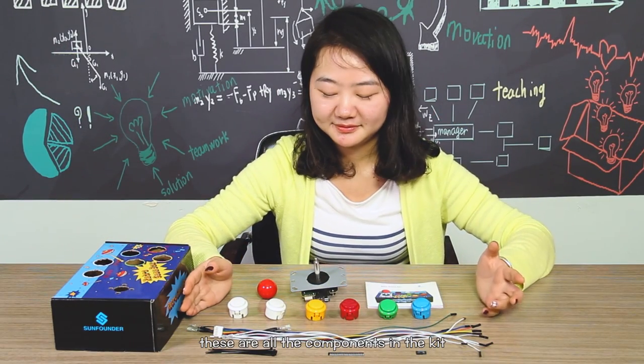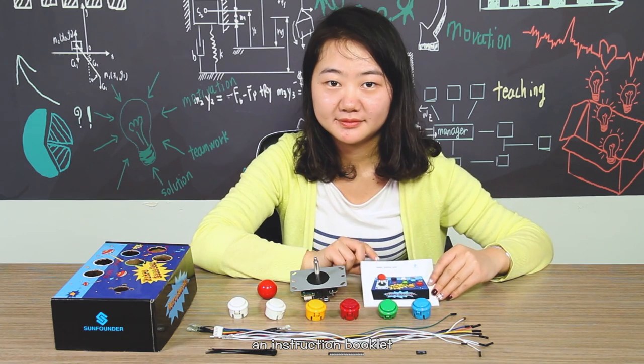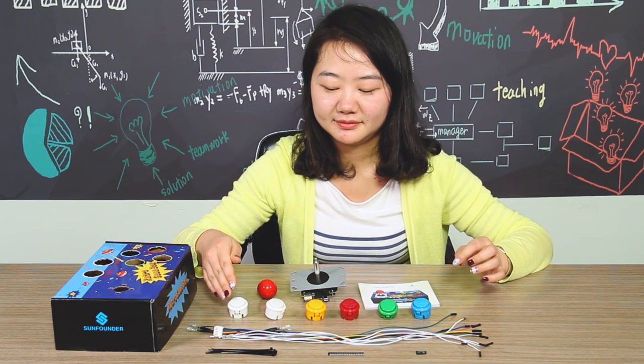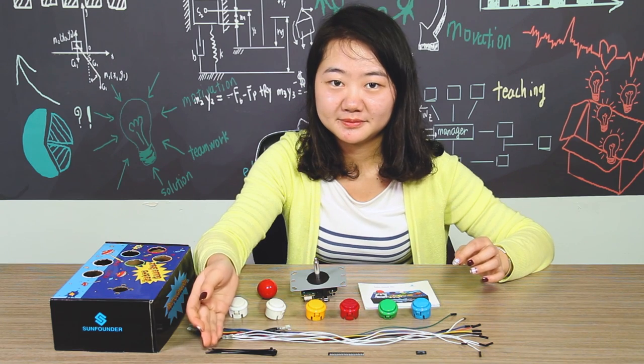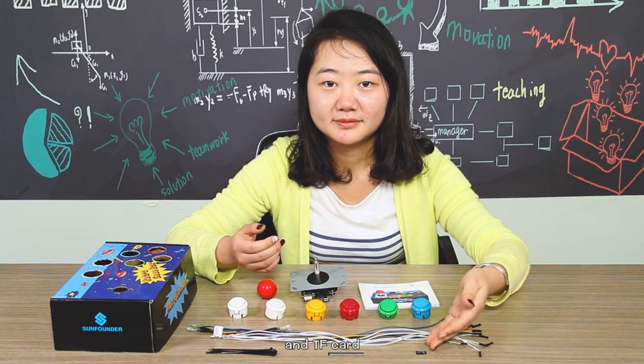These are all the components in the kit, including a joystick, an instruction booklet, six arcade buttons, different kinds of wires, cable ties, a GPIO reference board, and TF card.